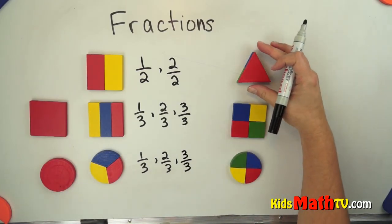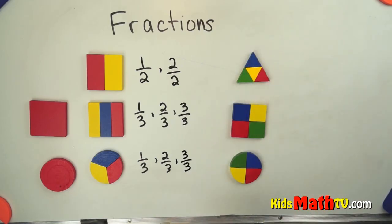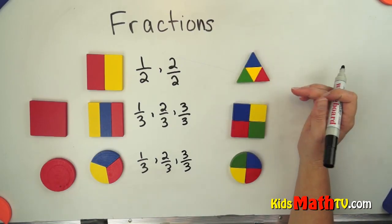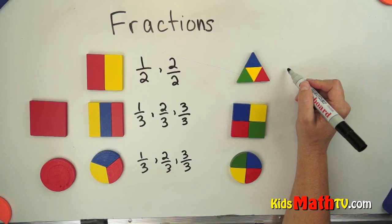Here's a triangle. This triangle is actually split up into one, two, three, four parts. So this time we're going to have fourths. So four equal parts.